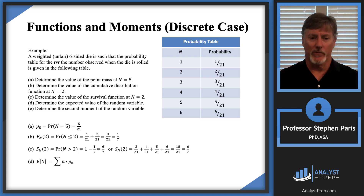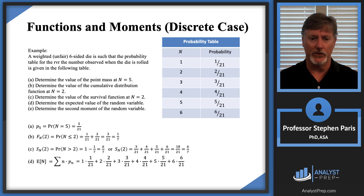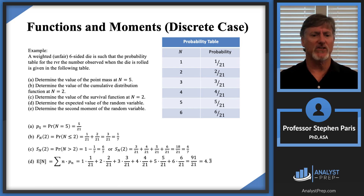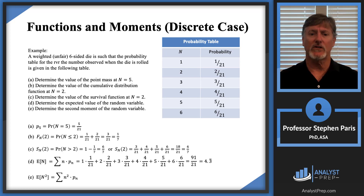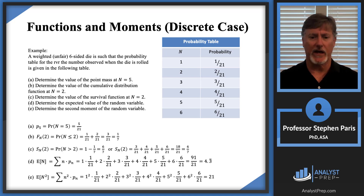Part D: what's the expected value of the random variable? Remember, the expected value — the first moment — is the sum product from the probability table. Take each value in the support, multiply by its corresponding probability, and add them all up. Working through that gives 91 over 21, which is approximately 4.3̄. Part E: the second moment squares the support values first, multiplies by their corresponding probabilities, and sums. Working through the arithmetic gives 21 for the second raw moment. Those are functions and moments in the discrete case — we'll discuss the continuous case in another video.